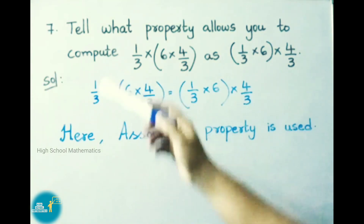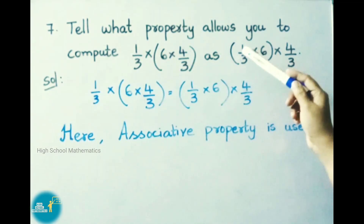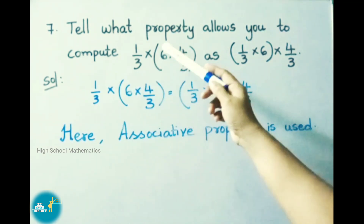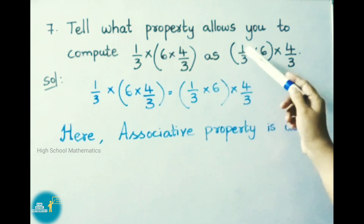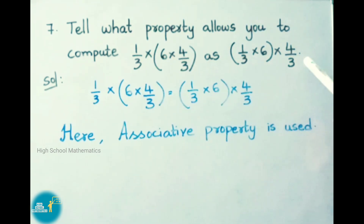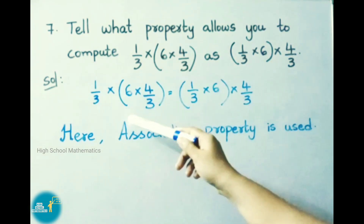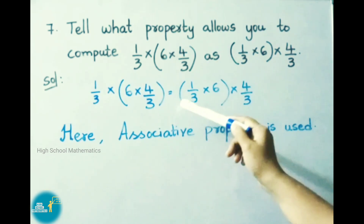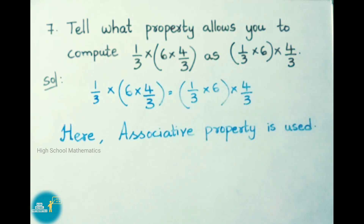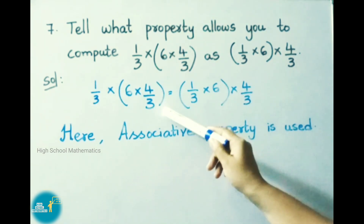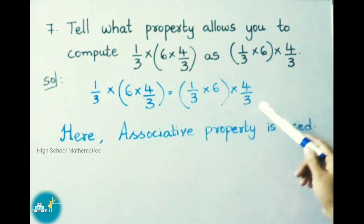See question number 7: What property allows you to compute 1/3 × (6 × 4/3) as (1/3 × 6) × 4/3? The given expression 1/3 × (6 × 4/3) = (1/3 × 6) × 4/3 is the associative property: A × (B × C) = (A × B) × C. So associative property is used here.